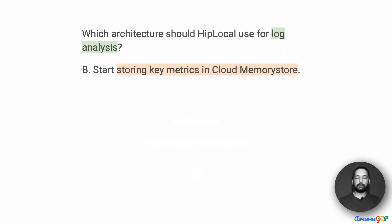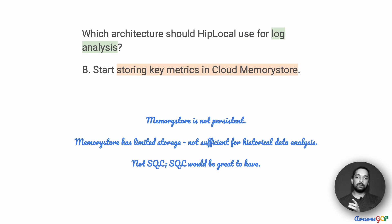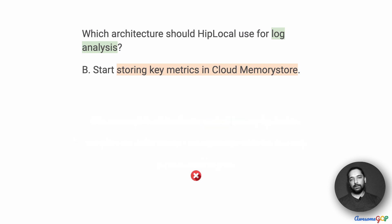How about we store key metrics in Cloud Memory Store? The same issue applies first: what are these key metrics and where are we capturing them? We haven't got them yet to store. Even assuming we have that, Cloud Memory Store has a problem in that it is not persistent. Also, because it is stored in memory, there is going to be less scalability with respect to storage. Therefore, it is definitely not sufficient for historical data analysis. Neither is Memory Store a SQL-based storage system, and ideally we would love to have SQL for analysis. So option B is not a good option.